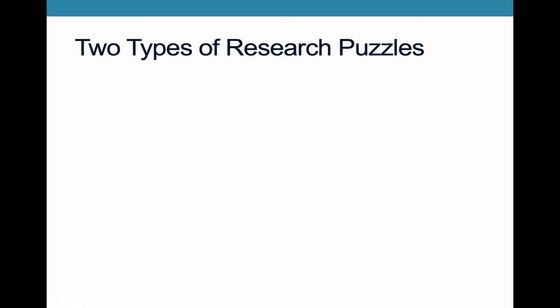There are two types of research puzzles that we can think about. And these are the two types that Schwedler develops in her 2013 piece. So the first one is one where there's no previous explanation in the literature out there for the phenomenon that we're seeing. Something took us totally by surprise and we're trying to build up a new literature to explain this.